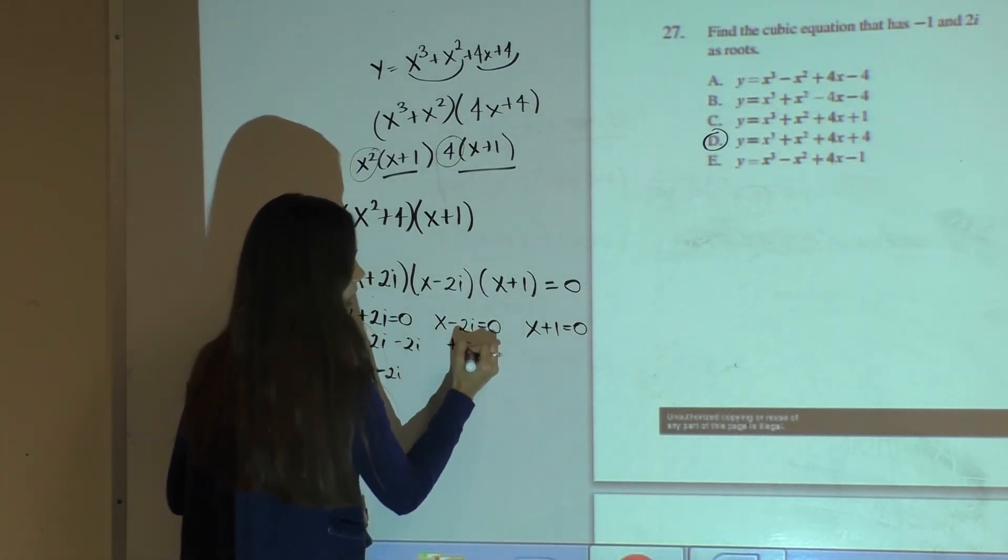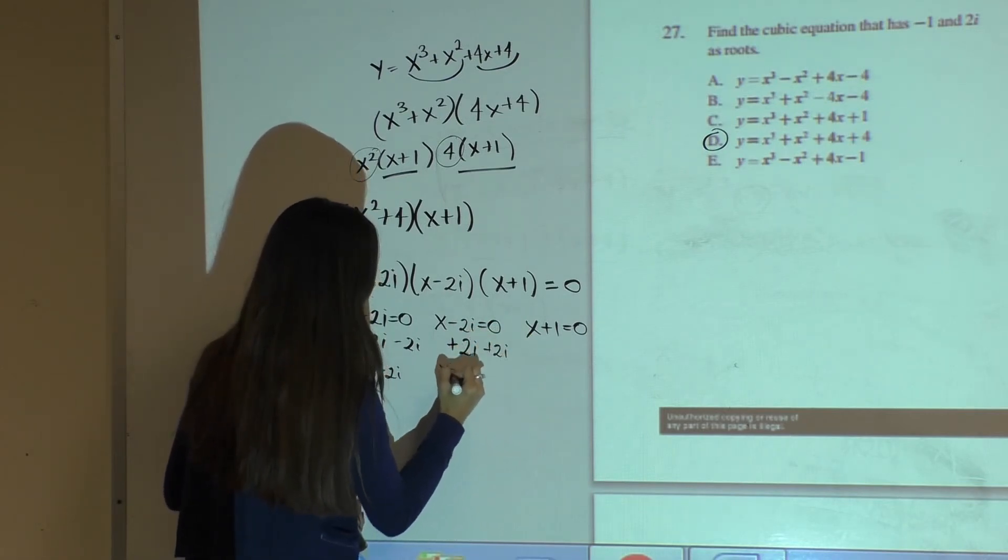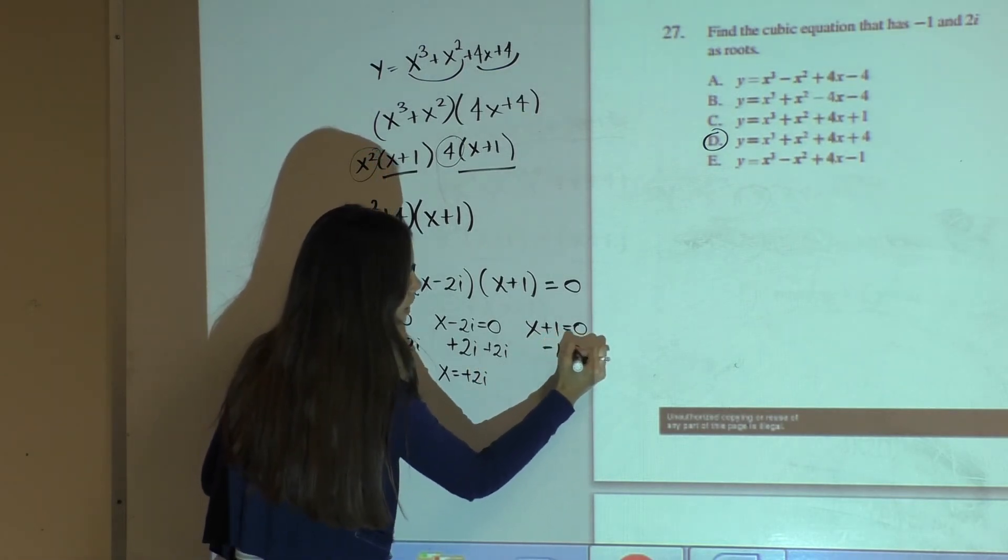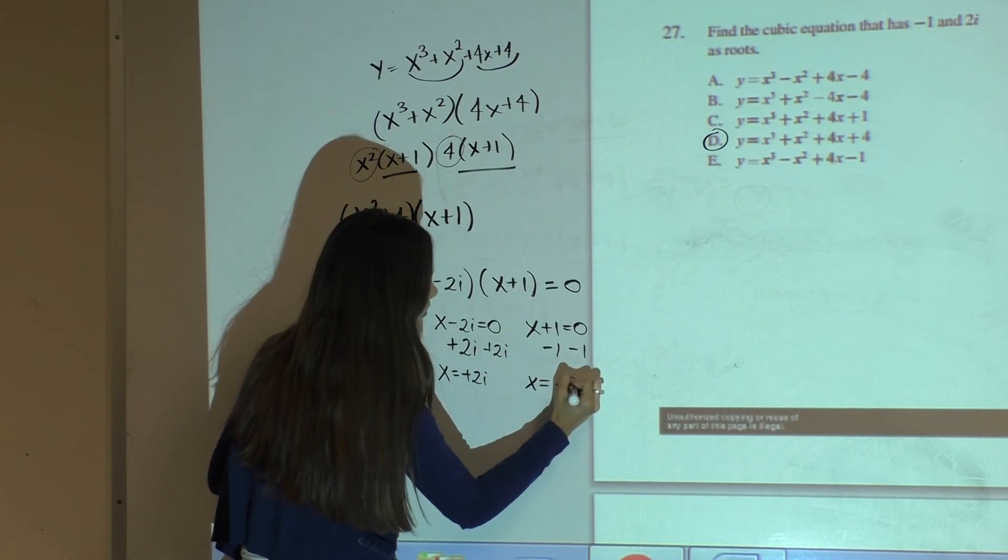In this case, I will add 2i to both sides and be left with x equals a positive 2i. In this case, I will subtract 1 from both sides and be left with x equals negative 1.